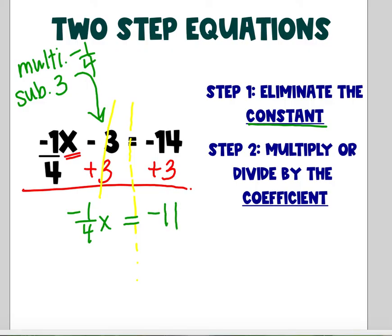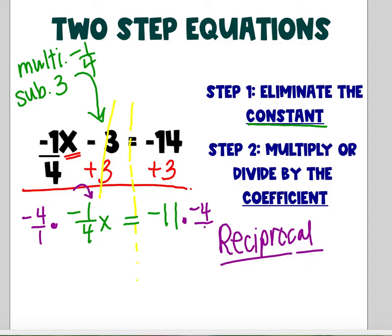And here I have a fraction and a variable joined by multiplication. So we're going to use what's called the reciprocal. Because step two is to multiply or divide by the coefficient. My coefficient here is my negative one-fourth. And I'm going to multiply by the reciprocal, which is negative four over one. Just flip that fraction. Which means I have to multiply the other side by negative four. So I have negative four over one times negative one over four. These are reciprocals, which make me a big fat one.